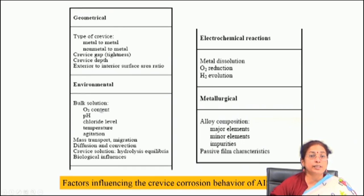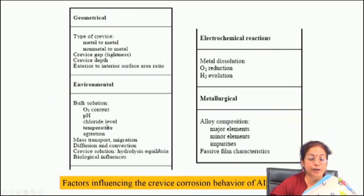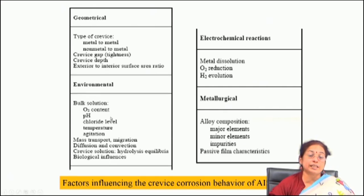Environmental factors include oxygen content, pH, chloride level, temperature, and agitation. Mass transport factors — including diffusion and convection, whether the flow is laminar or convective — also matter. Biological influences can also be significant: microbiological species present in the environment can accumulate on the surface and act as sites for crevice corrosion initiation. If you do not clean it properly, after a while there will be severe crevice attack, and you must repair the part to prevent component damage.